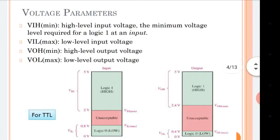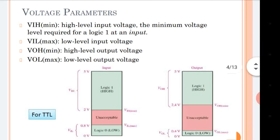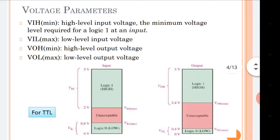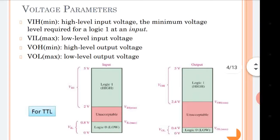First are the voltage parameters. There are four voltage levels: VIH, VIL, VOH, and VOL. In a digital circuit, we talk only in terms of 0s and 1s — logic low is logic 0 and logic high means logic 1.